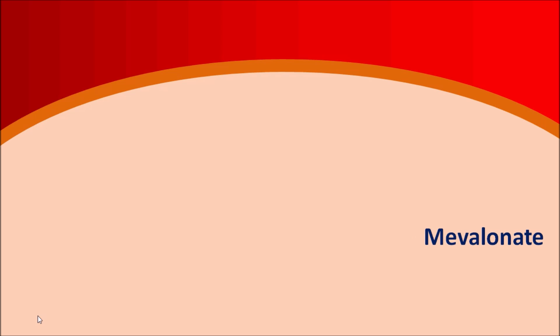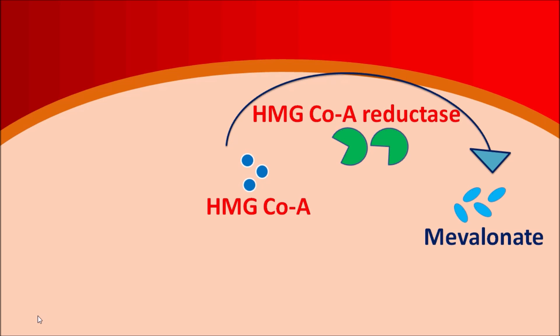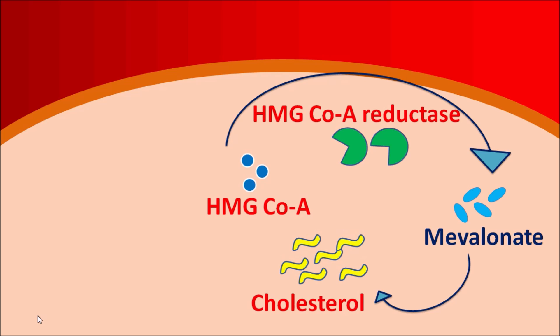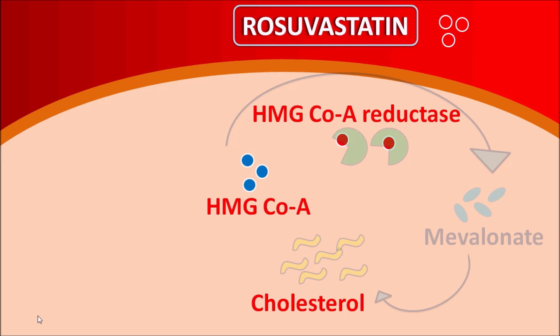Rosuvastatin mainly acts on the mevalonate pathway. Within hepatocytes, cholesterol is biosynthesized through this pathway. The important precursor for mevalonate is HMG-CoA, which is reduced by the enzyme HMG-CoA reductase to produce mevalonate. Mevalonate is then converted into cholesterol through several steps. When rosuvastatin is administered, it blocks the HMG-CoA reductase enzyme, inhibiting cholesterol biosynthesis within the liver. Since HMG-CoA reductase is responsible for the rate-determining step in cholesterol biosynthesis, the entire turnover of cholesterol production can be controlled by rosuvastatin.